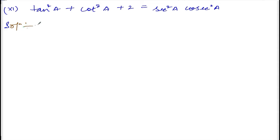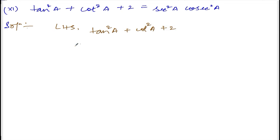So left hand side is tan square a plus cot square a plus 2. Now tan square a we need to convert into sec square a and cosec square a.